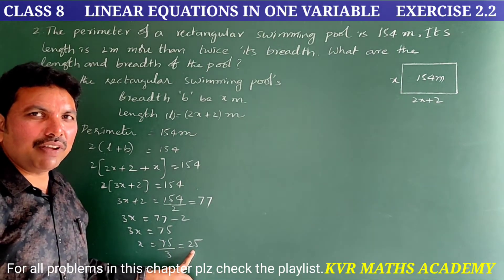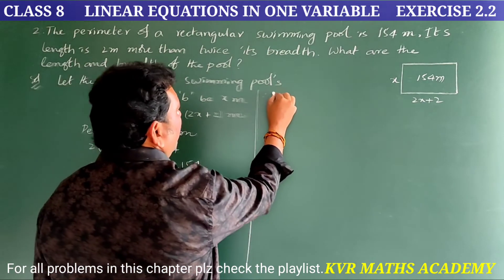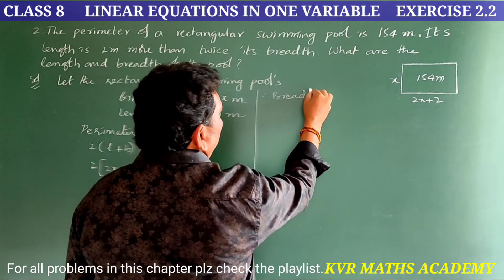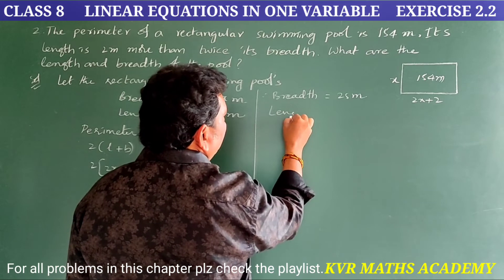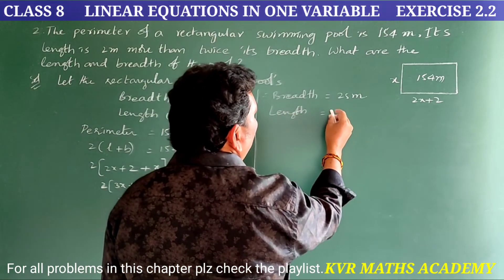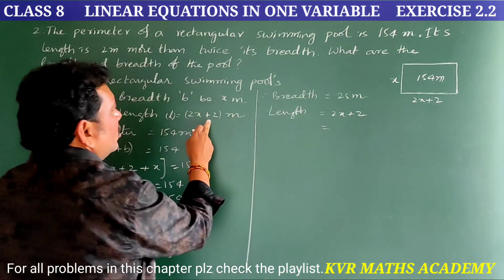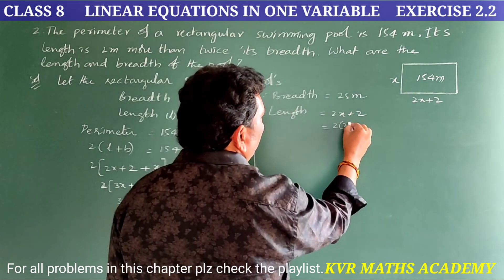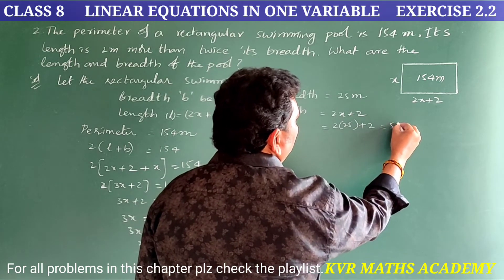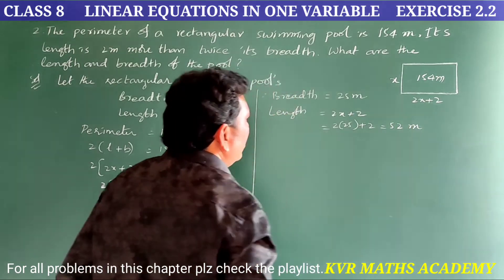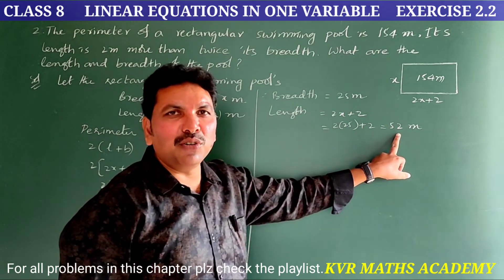x = 25 means the breadth is 25 meters. Therefore breadth = 25 meters. Length = 2x + 2 = 2 × 25 + 2 = 50 + 2 = 52 meters. So breadth is 25 meters and length is 52 meters.